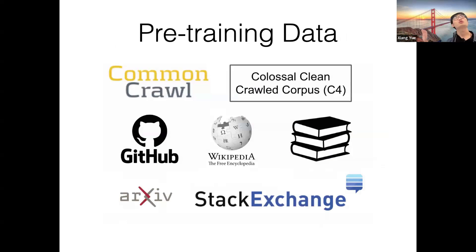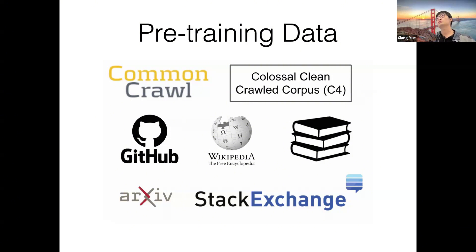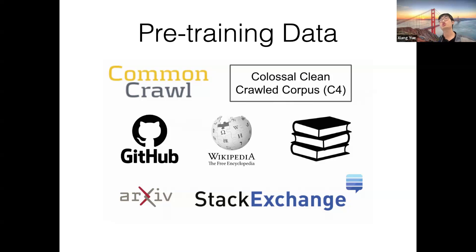In the pre-training stage, the model is trained to predict the next token, so we need a very large corpus of unlabeled text. People get this large-scale corpus from the web. Common Crawl is one of the most important sources. Besides that, there are other sources available: code data from GitHub, and also arXiv, Stack Exchange, Wikipedia, and books are typically added to the pre-training corpus to get a very diverse mixture of data.